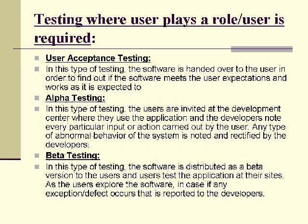Testing methods where the user plays a role — user is required. User acceptance testing: in this type of testing, the software is handed over to the user in order to find out if the software meets the user's expectations and works as expected.